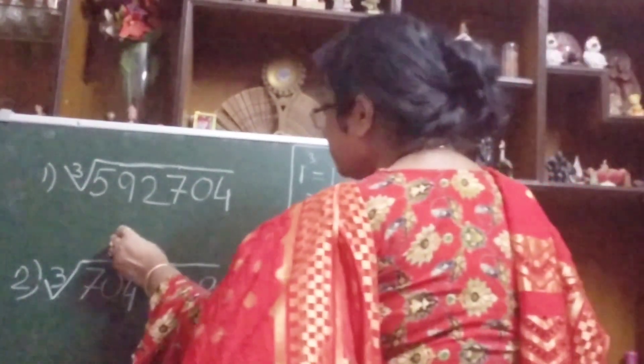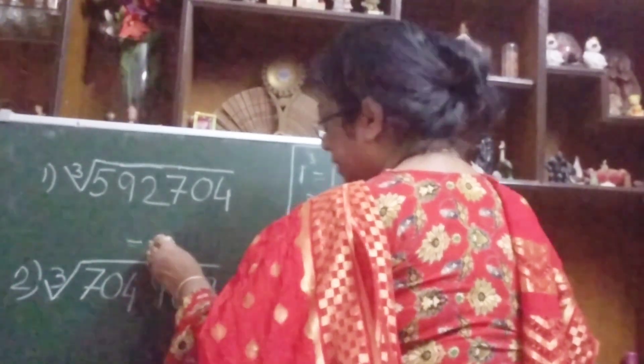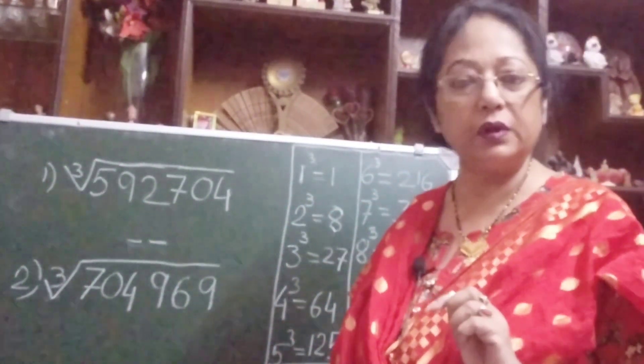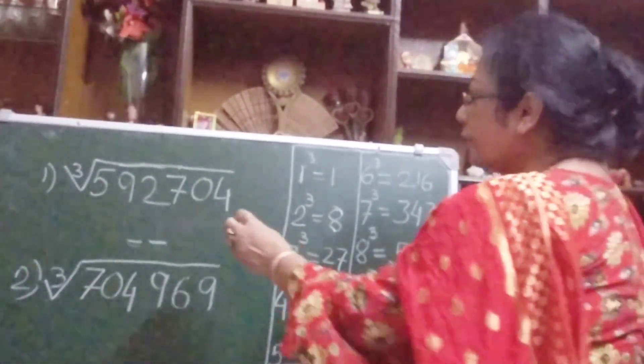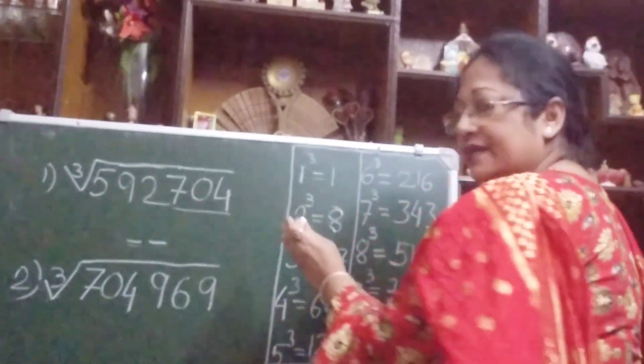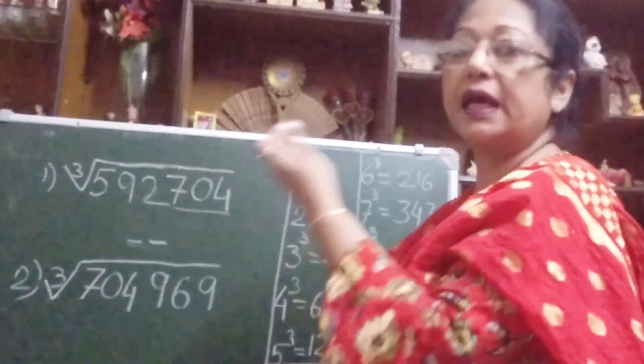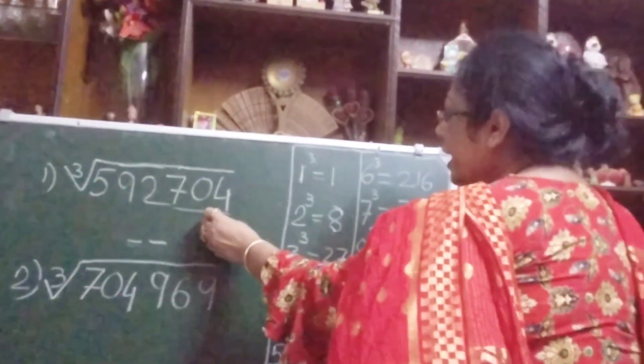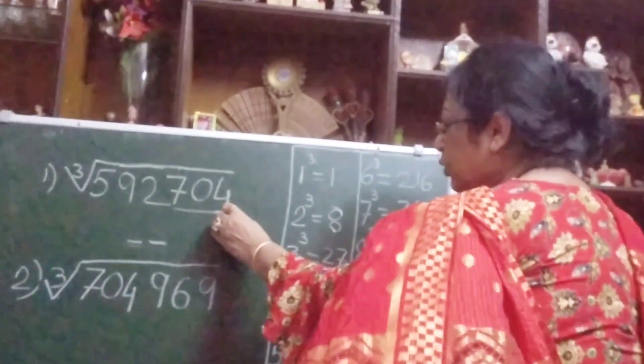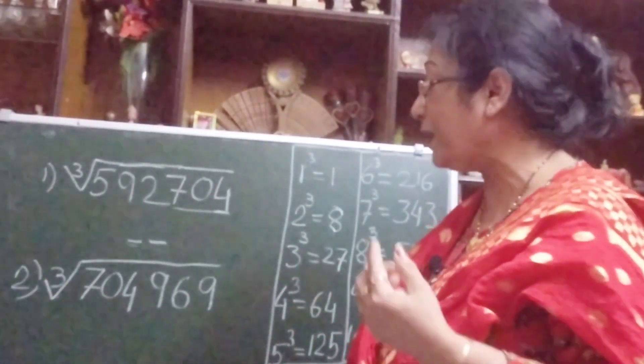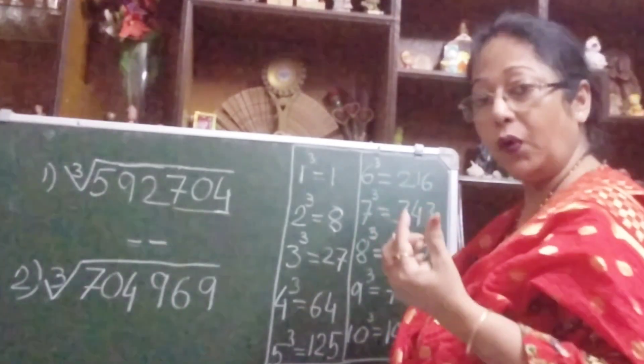Two digit number answer will come. So let's see how we will do. First you take these 3 digits from right side, not from left side. From right side you take these 3 digits and you focus on this unit place digit. What is there in the unit place? There is 4.